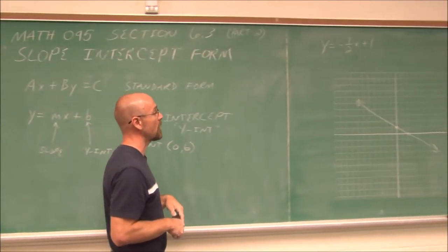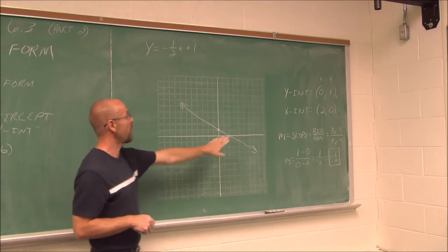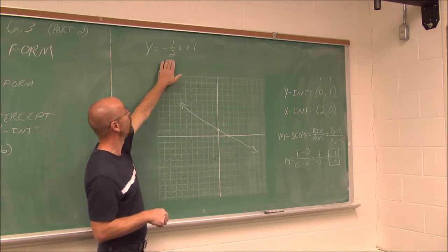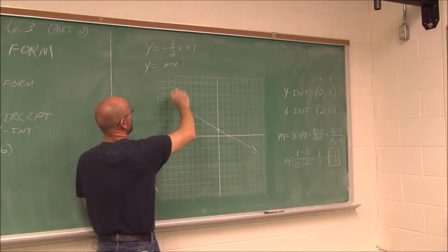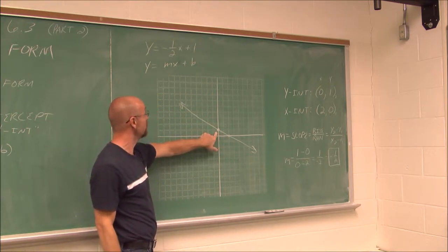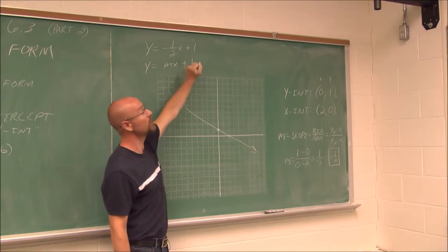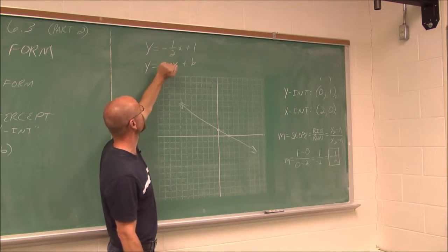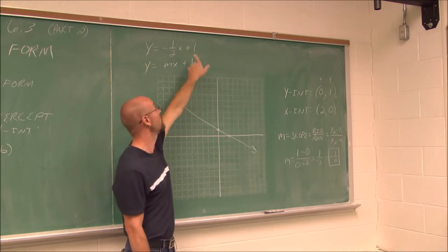Let's look at the example from the first part of this video: y equals negative 1 and a half x plus 1. We graphed it by finding its intercepts and slope. The slope is the coefficient of x — negative 1 half — and the b value is 1. When we found the y-intercept, we got the point (0, 1), so b equals 1. The line decreases at a rate of 1 half and crosses the y-axis at positive 1.